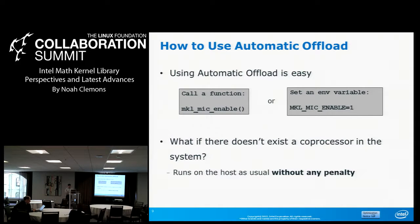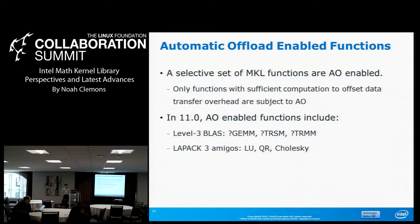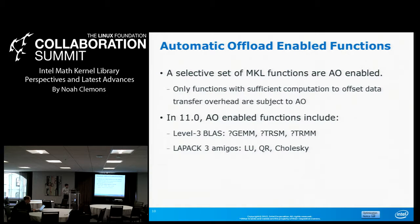Level 3 BLAS — GEMM, TRSM, and TRMM — and the LAPACK 3 Amigos — LU, QR, and Cholesky — are all automatic offload enabled. Call MKL MIC enable and it will automatically offload those functions, by default deciding how much to run on host versus coprocessor. It also decides whether you have enough computation to offset data transfer overhead. If you feed in a tiny 1,000-element dataset, unless you force it, we would most likely not run on the coprocessor — we're trying to be smart about whether it's worthwhile to bring data over there.